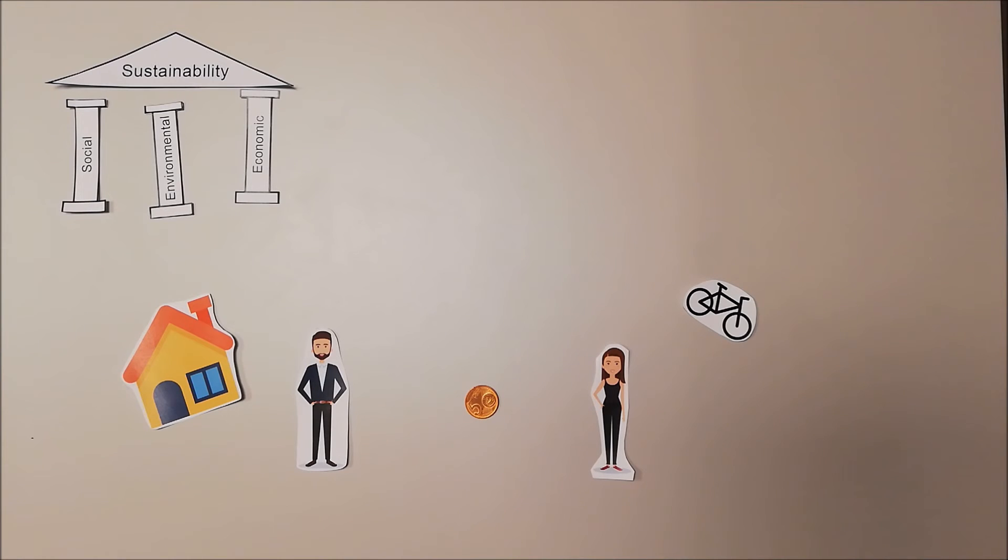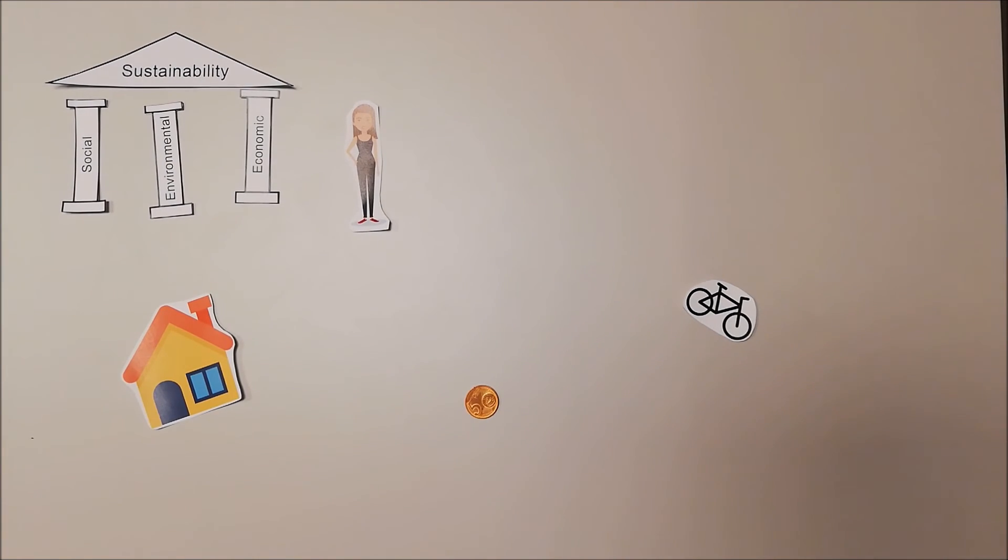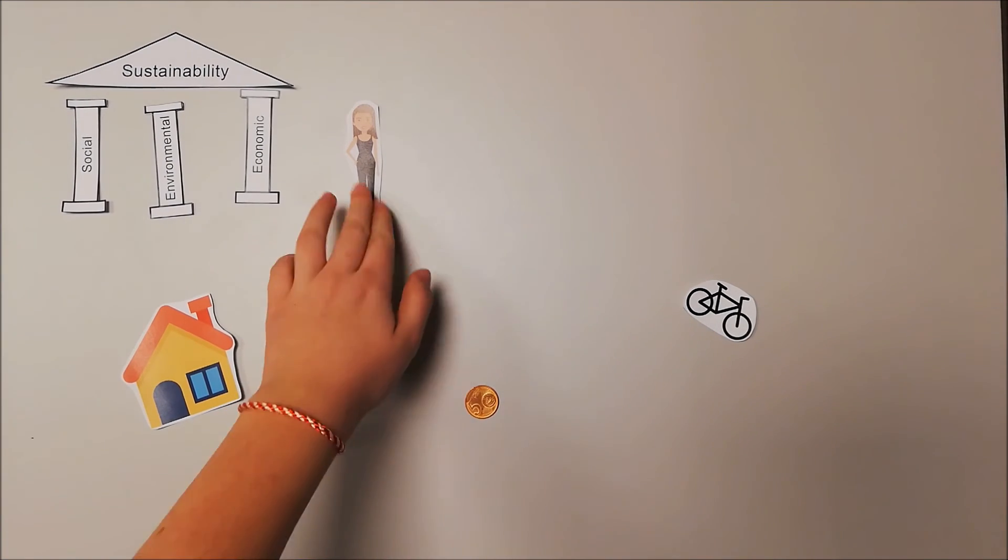All in all, it can be noticed that the three pillars are present in Tina's world and therefore sustainability being kept up, while in Timmy's world it is lacking, the roof being on the ground.